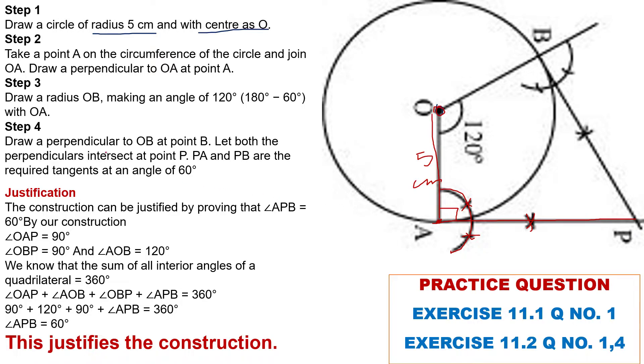Step number 3: draw a radius OB making an angle of 120 degrees. Why? This is the question mark. Because when we see, if this is the tangent, radius to the tangent is always perpendicular. 90 degrees, 90 degrees.